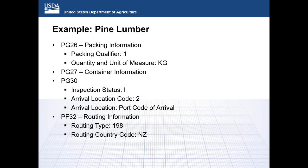PG-26 is used to identify packing and quantity. In this case, the filer uses one to identify a single packaging and reports the amount in kilograms. If cargo is shipped via container, that information would be reported in PG-27. For PG-30, the inspection status is I — product location for regulatory authority inspection. When reporting I for inspection status, the filer must report the arrival location code as 2. The arrival location is the first port of arrival and is transmitted as a port code. For PG-32 routing information, since this shipment did not transit or transship other countries, a code of 198 would be reported for the original location, with New Zealand as country of origin.